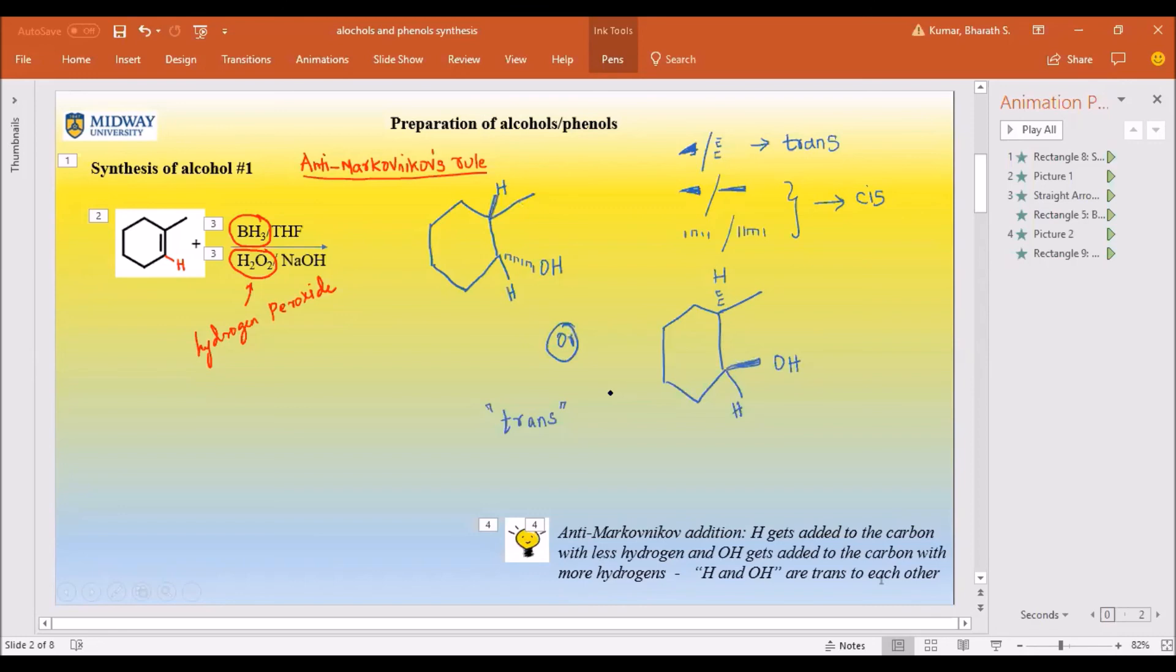This is the first method of synthesizing alcohols, and we have done an anti-Markovnikov addition by using borane and hydrogen peroxide in tetrahydrofuran and sodium hydroxide. Stay tuned for the remaining synthesis of alcohol methods.